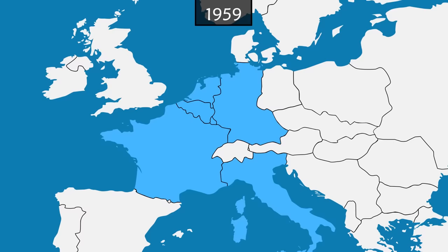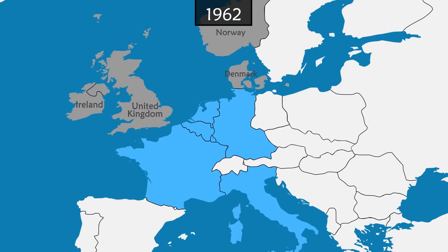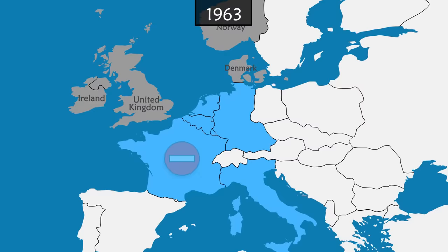Many countries ask to join the communities, including the United Kingdom. But France, under the leadership of Charles de Gaulle, vetoes the accession request, considering the UK as too close of an ally to the United States.